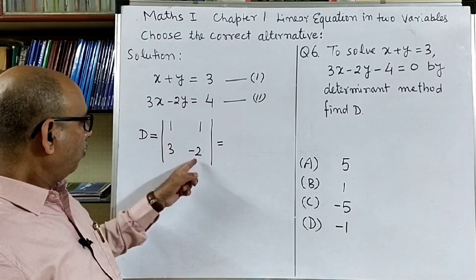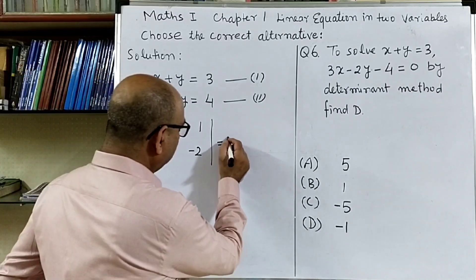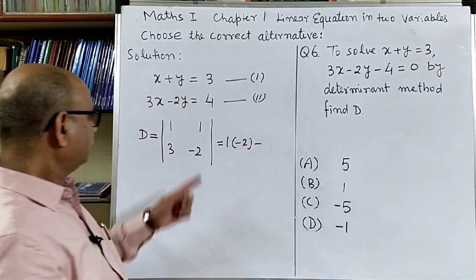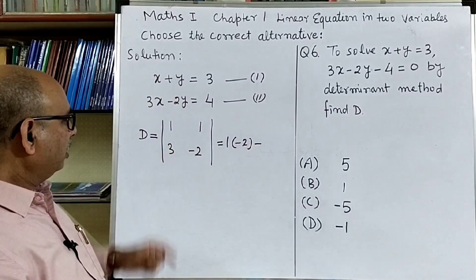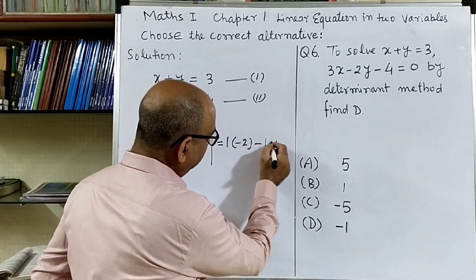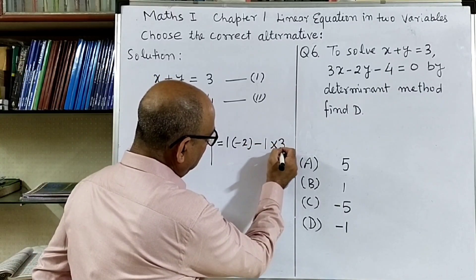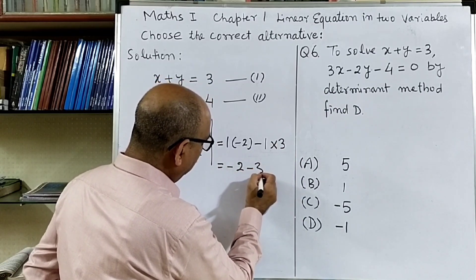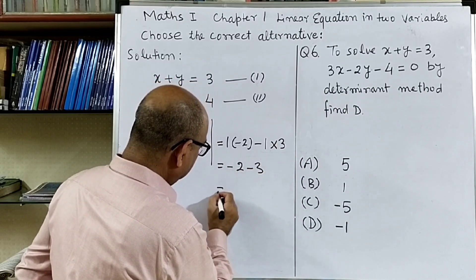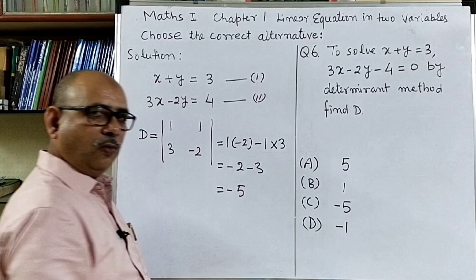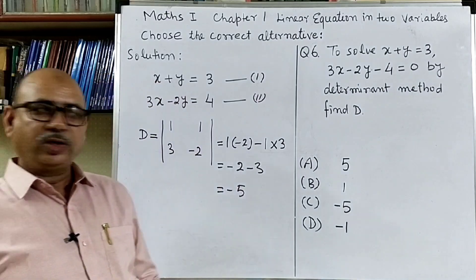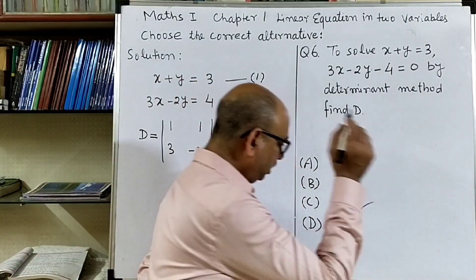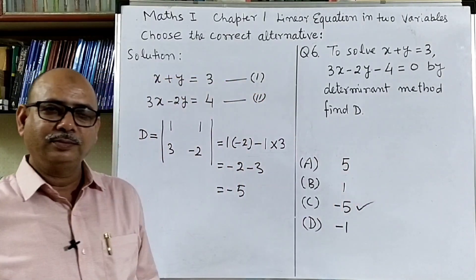D equals 1 into minus 2, minus 1 into 3, which is equal to minus 2 minus 3, giving D equal to minus 5. The correct answer is option C.